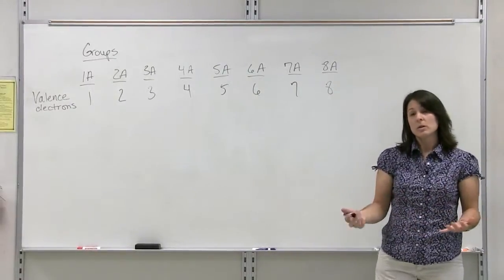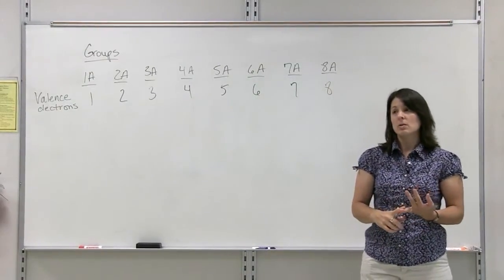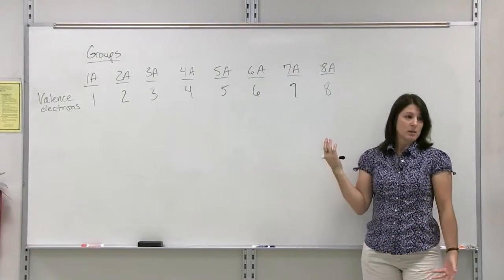So they are going to gain or lose electrons so that they reach 8 valence electrons.